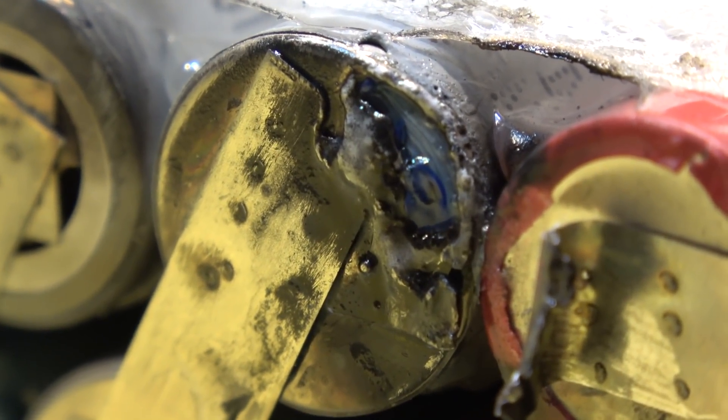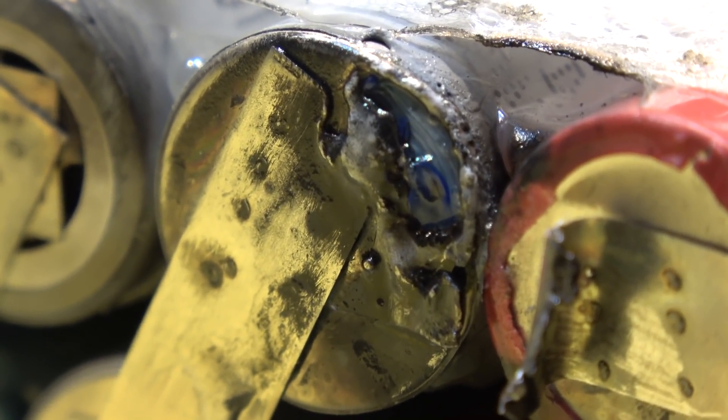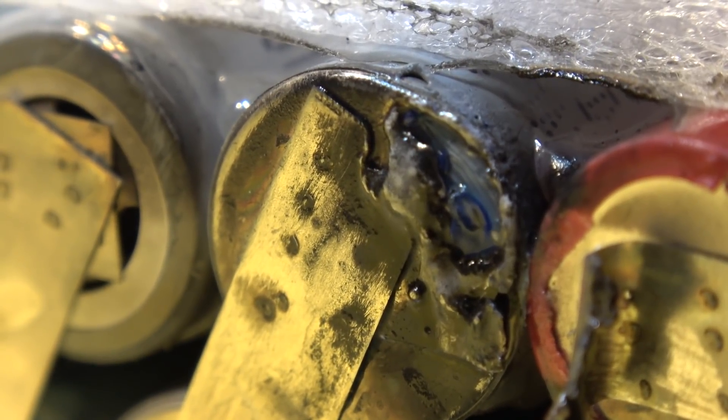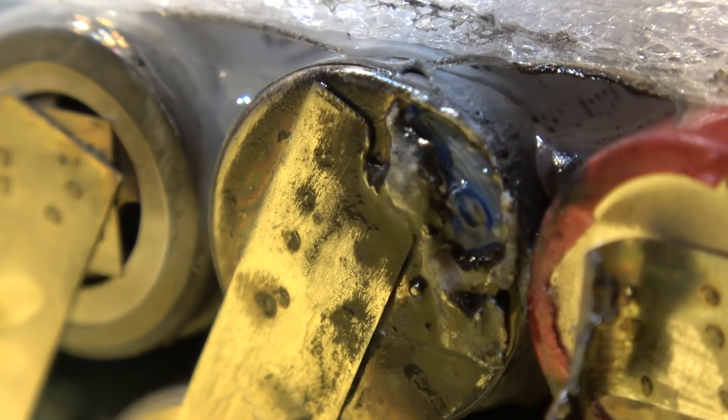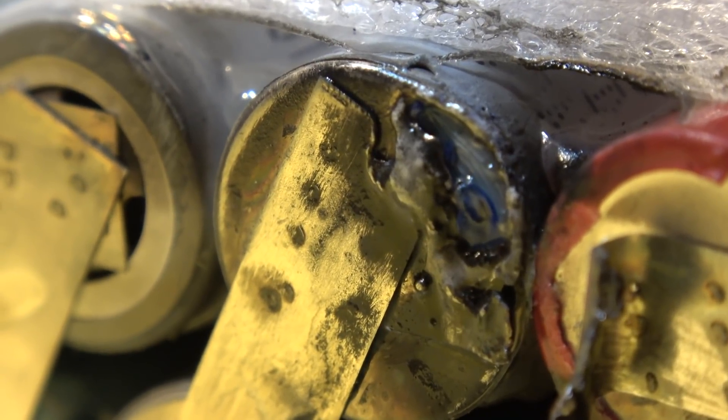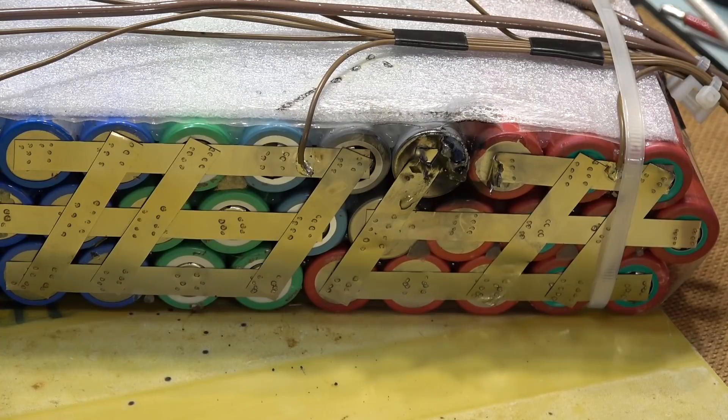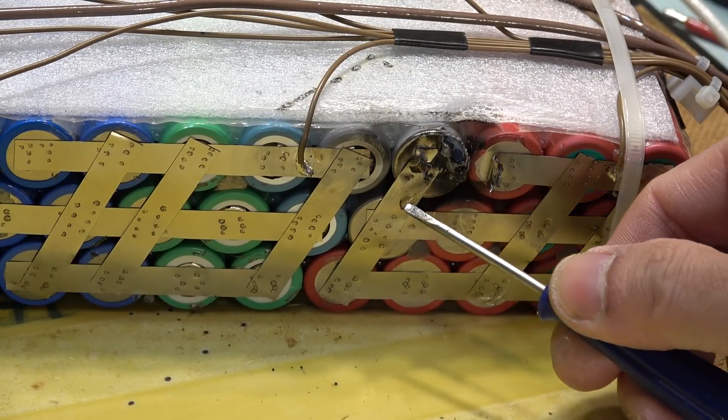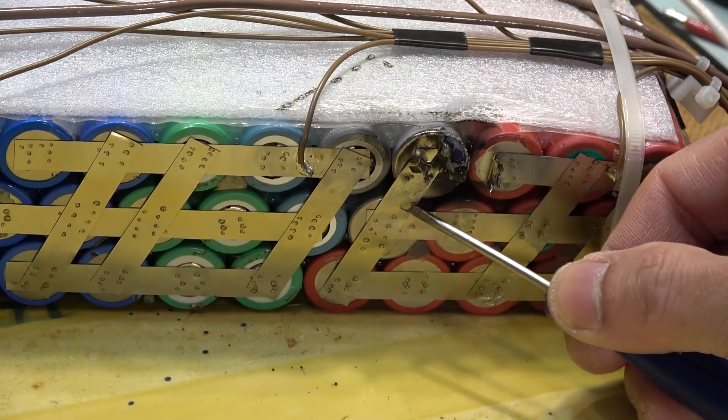You can see that it's right through the casing of the battery and now the electrolyte is leaking out. You can see that it's bubbling and still leaking electrolytes out. It's bleeding out.